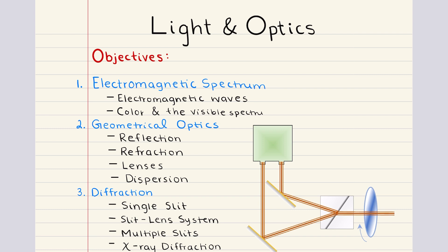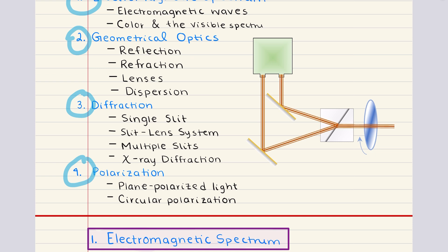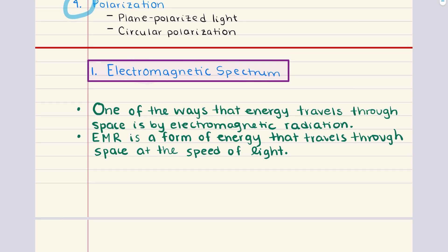In this chapter, we're going to cover the following objectives. We'll start with the electromagnetic spectrum, discussing the nature of electromagnetic waves and focusing on the visible spectrum to understand how energy travels through space. Next, we'll dive into geometrical optics, exploring reflection, refraction, and lenses. Third, we'll discuss diffraction, covering interference and how light spreads through a single slit, a slit lens system, and multiple slits. Finally, we'll review polarization by defining plane polarized and circularly polarized light. Let's get started with our first objective.